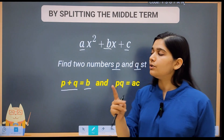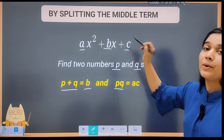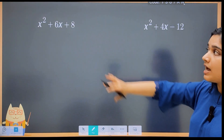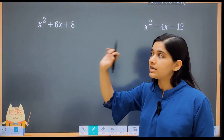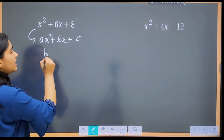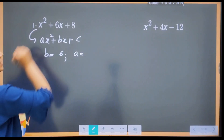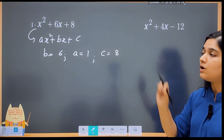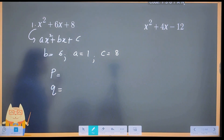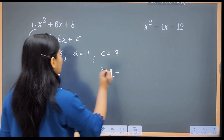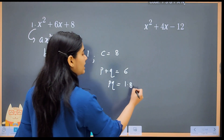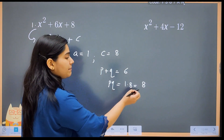Let's understand with an example. Our first example is x² + 6x + 8. If we compare this with ax² + bx + c, then b is 6, a is 1, and c is 8. Next step is to find two numbers p and q, such that p + q = b = 6, and p × q = a × c = 1 × 8 = 8.